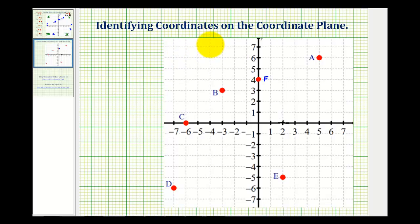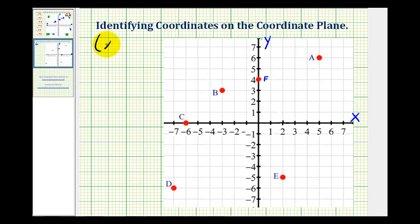We want to identify the coordinates or ordered pair for each of the points plotted on the coordinate plane. To do this, we need to remember that the horizontal axis is the x-axis and the vertical axis is the y-axis. So the coordinates for each point will consist of an x-coordinate and a y-coordinate. These are also called ordered pairs.